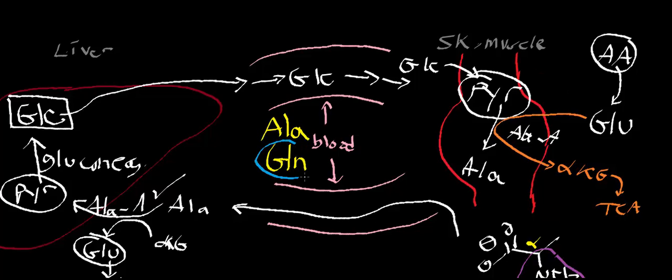We have one other amino acid to discuss for transporting amines in the blood: glutamine. When glutamate is present and there are excess amines, instead of putting them into the urea cycle, we can ligate ammonia to glutamate. This is important because ammonia is toxic to animals, and this ligation provides another way to handle excess ammonia.